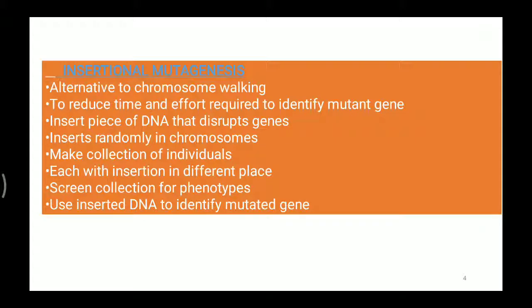By this, we are going to insert the gene for mutagenesis, thus reducing the time and effort required to identify the mutant gene, because we are creating the mutation. We insert a piece of DNA that disrupts genes and causes mutations, and this insertion occurs randomly in the chromosome. We make a collection of individuals, each with the insertion at different places. We can insert many tDNA sequences into many places of the chromosomes. We screen the collection for phenotypes and use the inserted DNA to identify the mutated gene.